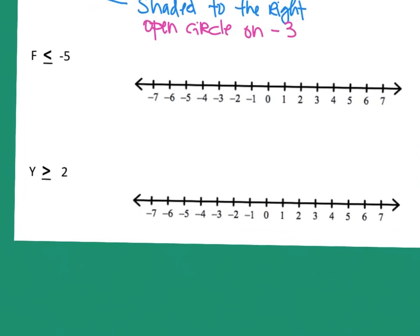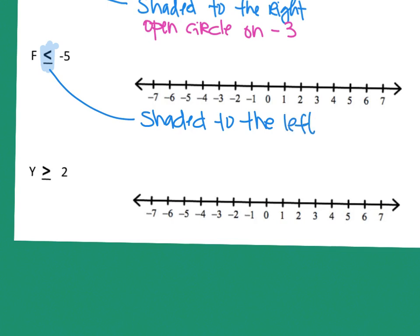The third one says less than or equal to. If it's less than or equal to, I'm going to shade to the left — less than means left. Because it has that equal to sign, it should be a closed circle on negative 5. Draw the circle on negative 5, shade it in, then on the number line shade to the left and put an arrow on the end to show it goes forever in that direction.